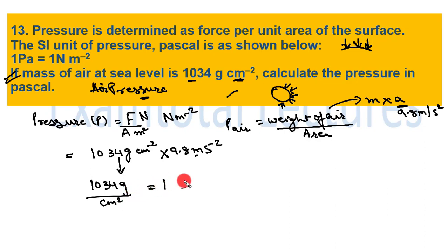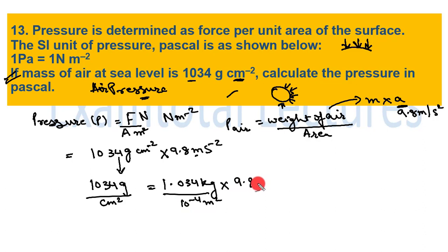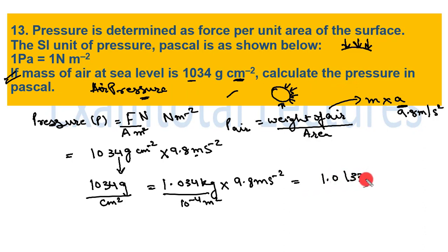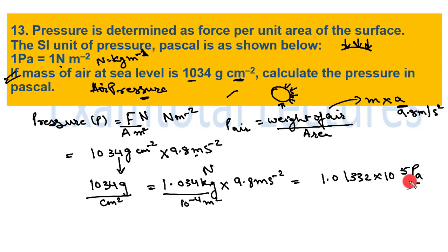After unit conversion, multiplying by 9.8 m/s² (acceleration due to gravity), the air pressure comes out to 1.01332 × 10⁵ pascals. Since 1 pascal = 1 newton per meter square, the answer is expressed in pascals. This is the answer to question 13.